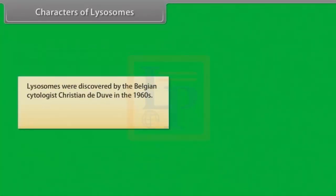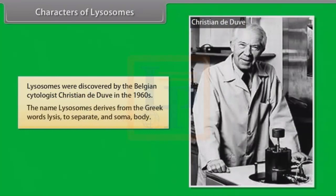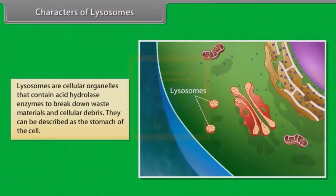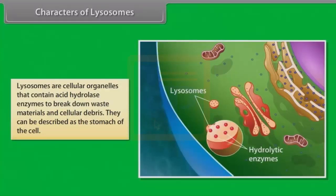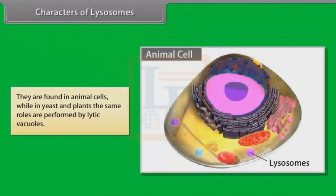Lysosomes were discovered by the Belgian cytologist Christian de Duve in the 1960s. The name lysosome derives from the Greek words lysis, meaning to separate, and soma, meaning body. They are frequently nicknamed suicide bags or suicide sacks by cell biologists due to their autolysis. Lysosomes are cellular organelles that contain acid hydrolase enzymes to break down waste materials and cellular debris. They can be described as the stomach of the cell. They are found in animal cells, while in yeast and plants the same roles are performed by lytic vacuoles.